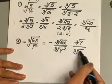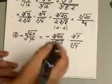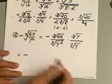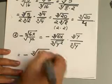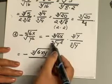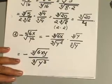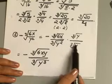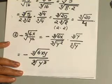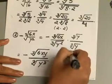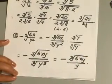Why did we multiply by just cube root of y? Because y squared times y gives y to the third, and a third power cancels out the cube root. Don't forget the negative sign in front. Cube root of 6x times cube root of y combines to give cube root of 6xy. The denominator becomes cube root of y squared times cube root of y, which is cube root of y to the third — the third power cancels the cube root. Your final answer is negative cube root of 6xy over y.